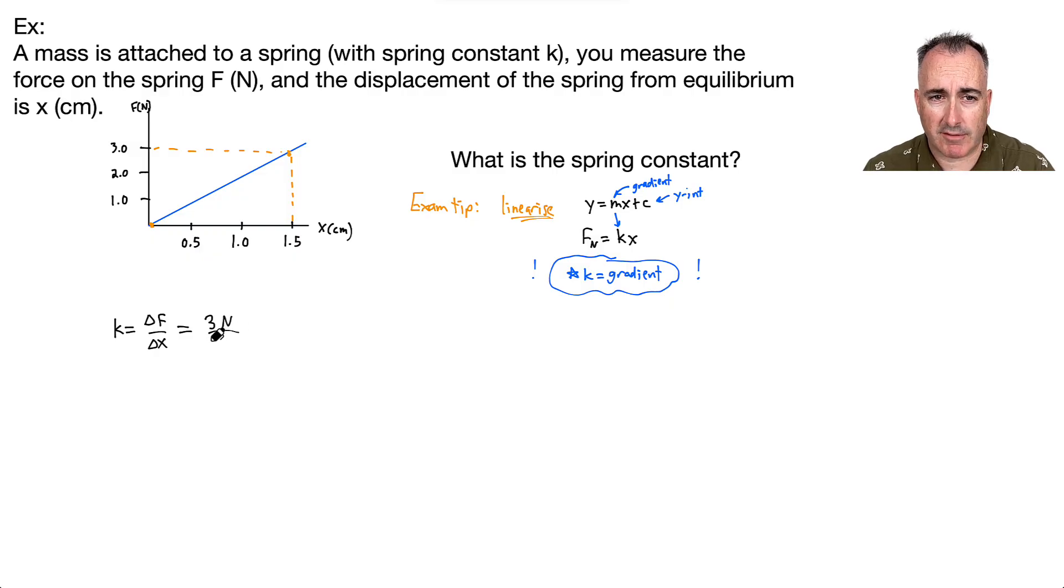Divide that by delta X, which is just 1.5, right? Don't I just put in 1.5? No, watch out, it's 0.015. That's really important, because these were centimeters. That wasn't obvious, so remember that. So that's key here. And this, by the way, now is in meters.